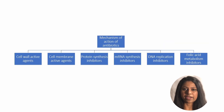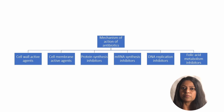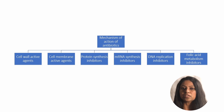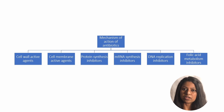According to their mechanism of action, antibiotics can be classified into six classes: antibiotics acting on the cell wall, antibiotics acting on the cell membrane, bacterial protein synthesis inhibitors, messenger RNA synthesis inhibitors, antibiotics affecting DNA replication, and antibiotics interfering with folic acid metabolism.